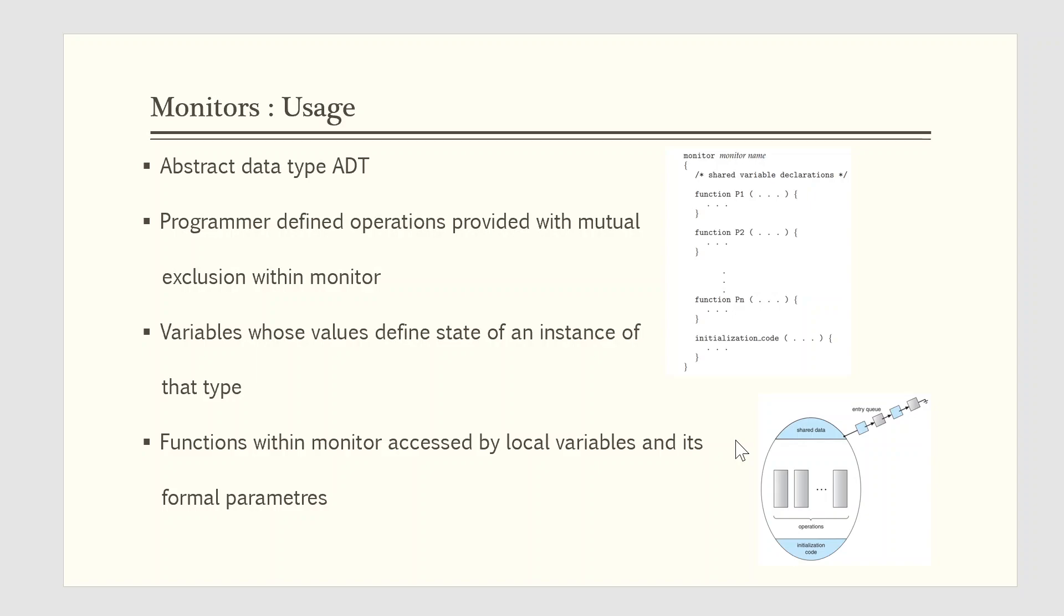An abstract data type or ADT encapsulates data with a set of functions that operate on that data that are independent of any specific implementation of the ADT. A monitor type is an ADT that includes a set of programmer defined operations that are provided with mutual exclusion within the monitor. The monitor type also declares variables whose values define the state of an instance of that type along with the bodies of functions that operate on those variables.